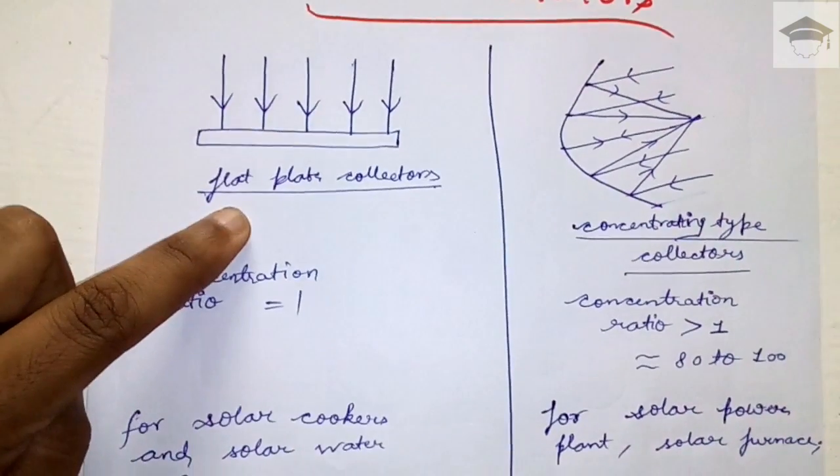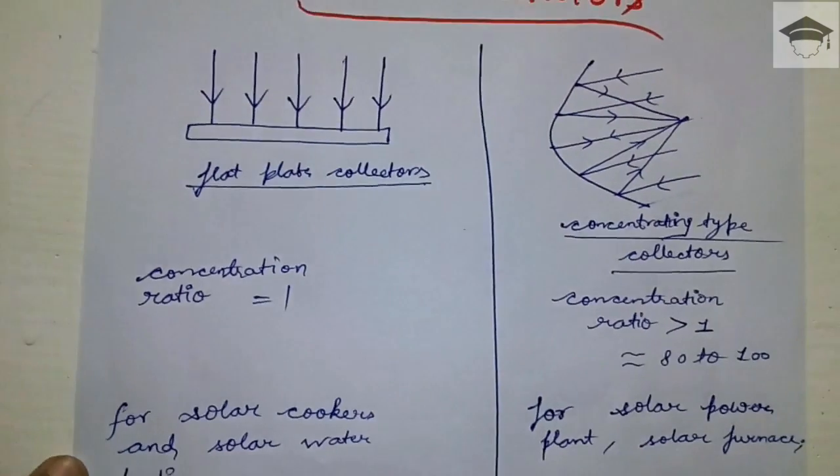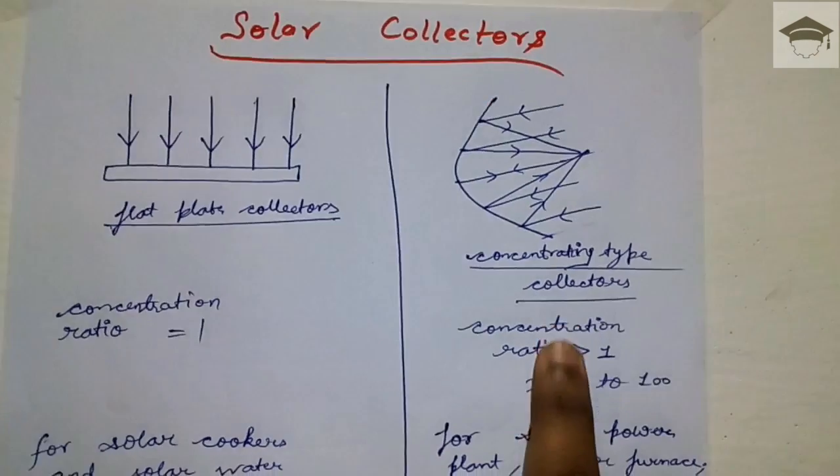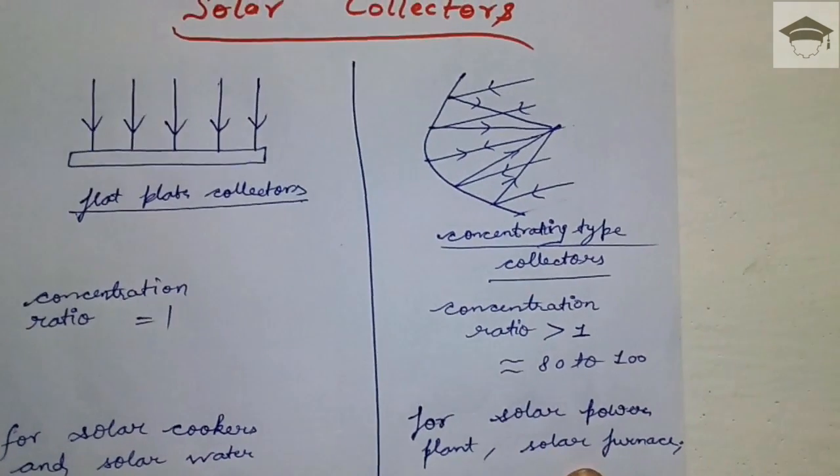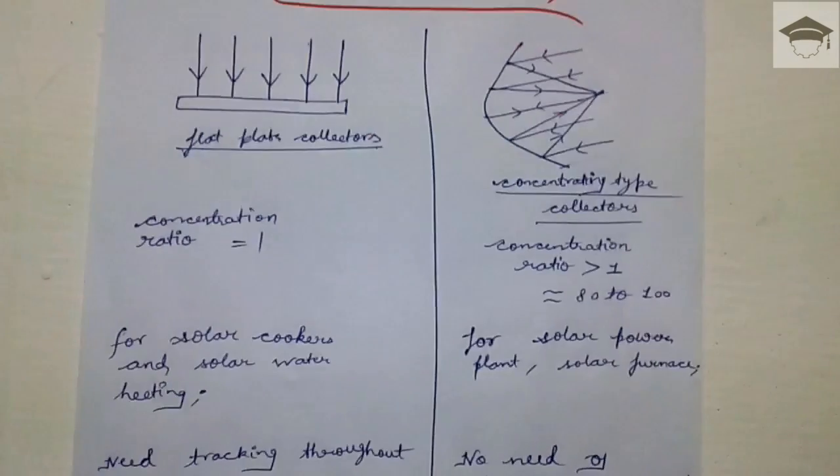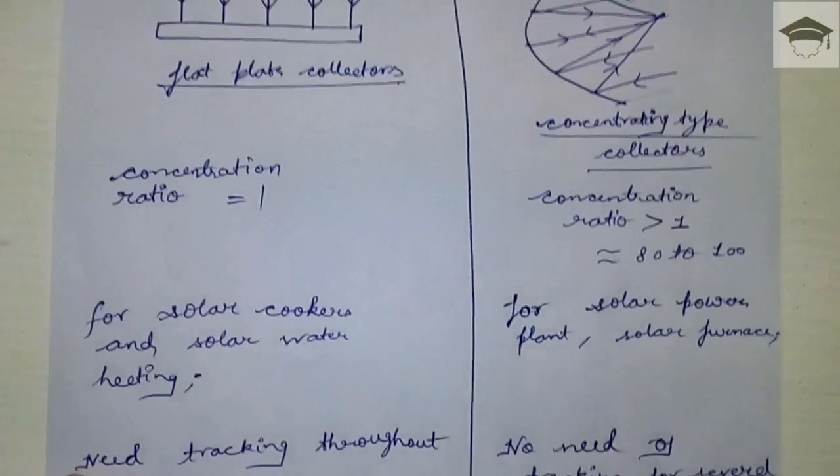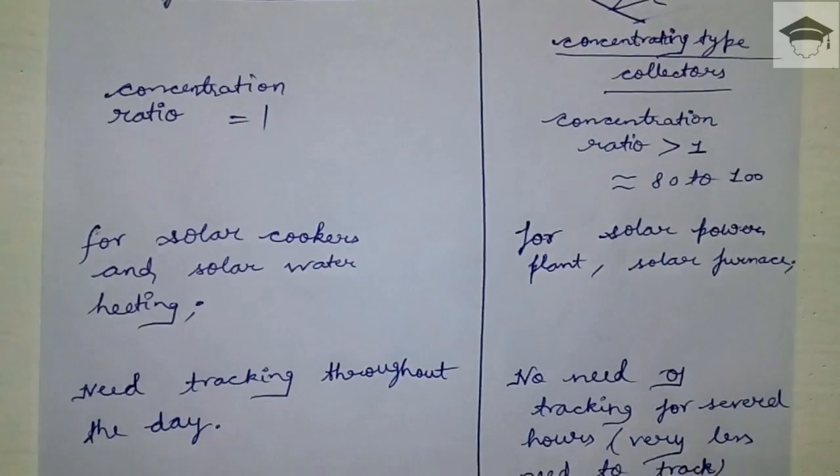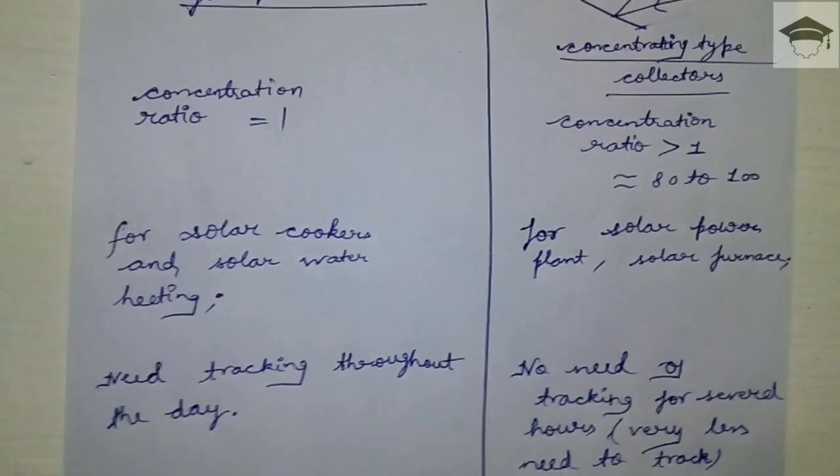Concentrating collectors need tracking throughout the day - around every 5 to 10 minutes tracking needs to be done. This tracking has two types: day and night tracking and seasonal tracking. Tracking is very much needed for flat plate collectors.